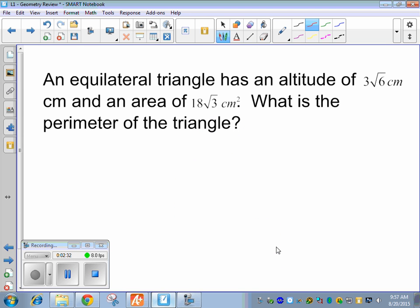Alright, so an equilateral triangle has an altitude of 3 root 6 centimeters and an area of 18 root 3 centimeters squared. What is the perimeter of the triangle? Okay, so we're going to start with an equilateral triangle, which means all the sides are the same. And we've got the altitude, which is the height of the triangle, right down the middle. That's 3 root 6.